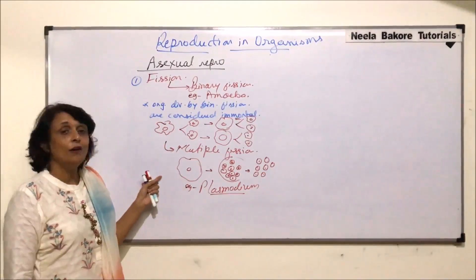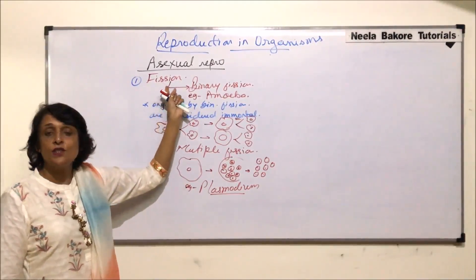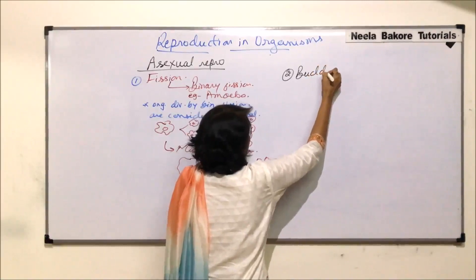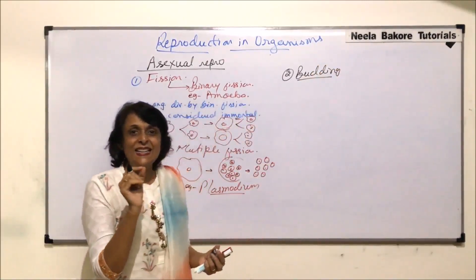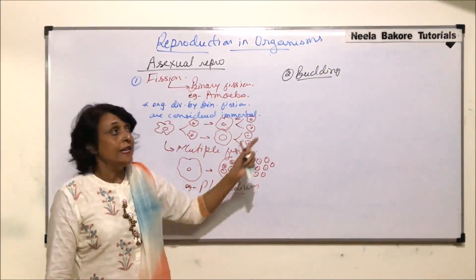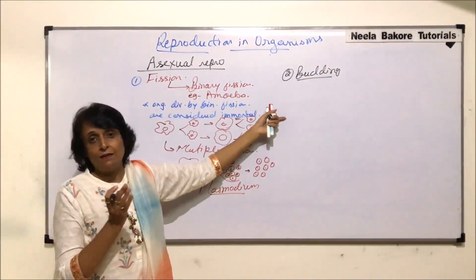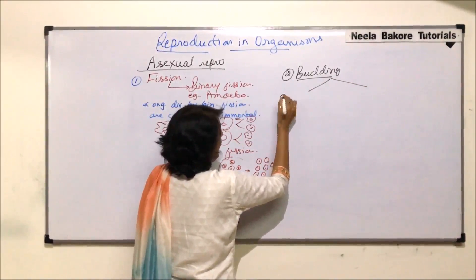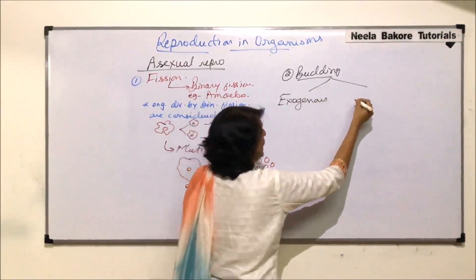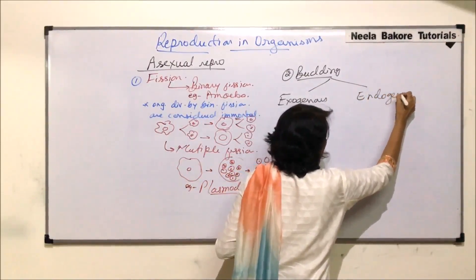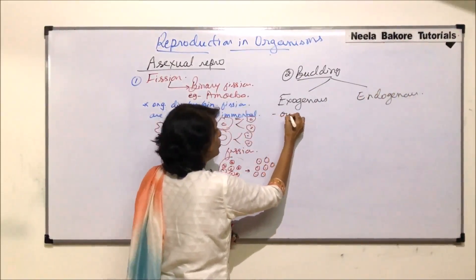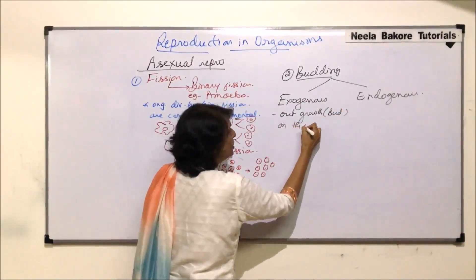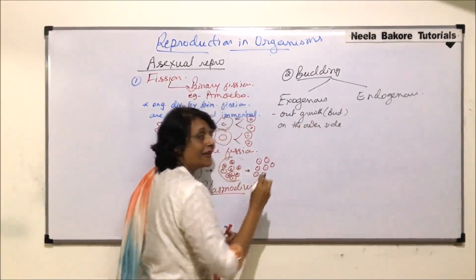The second method of asexual reproduction is budding. A bud is a tiny growth produced on the parent body. Based on where the bud is produced, there are two types: exogenous and endogenous. Exogenous budding means the outgrowth, called the bud, is on the outer side of the parent body.